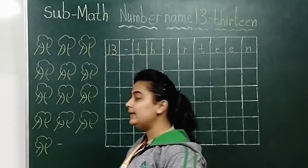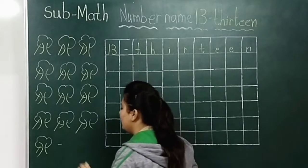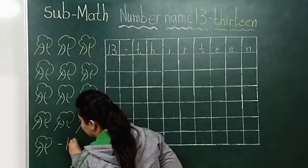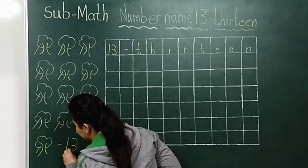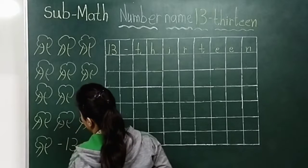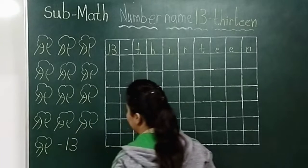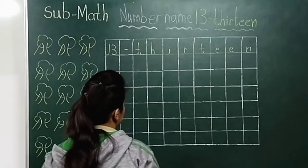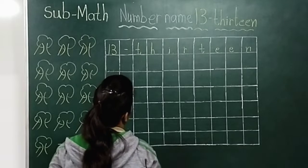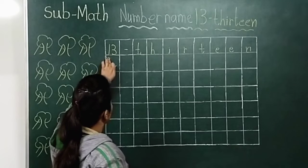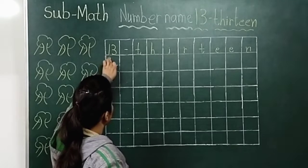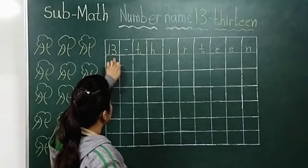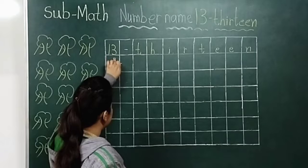How many trees are there? 13. Okay, now look here. First, we have to write number 13.